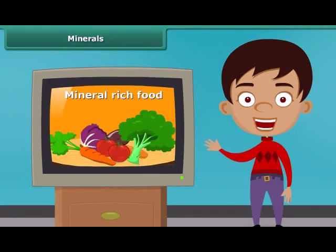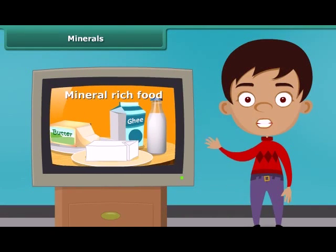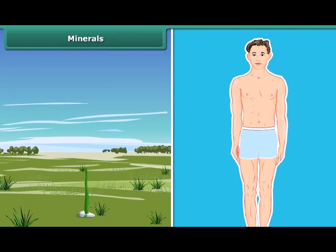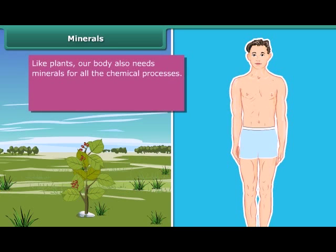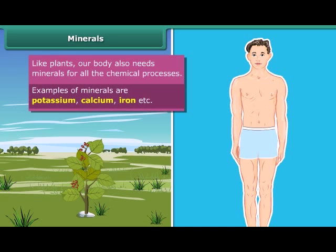You might have seen many advertisements of mineral-rich food items. Now let's know why they are so important. Actually, plants need minerals for growth. Besides this, our body also requires minerals in small quantities for all the chemical processes. Potassium, calcium, iron, etc. are some common examples of these minerals. Let us know more about the sources and the role of these minerals using the next table.